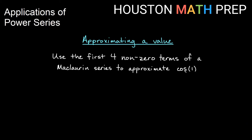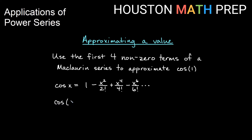If I'm going to approximate cosine of one, I want to use the McLaurin series for cosine. Remember that's an alternating series with only even powers — the polynomials for cosine are even polynomials. So if I want to evaluate cosine of one, we'll say cosine of one is approximately equal to, plugging one in for x in our series, we get one minus one squared over two factorial plus one to the four over four factorial minus one to the six over six factorial. We can clean that up — all these powers of one are just going to be one.